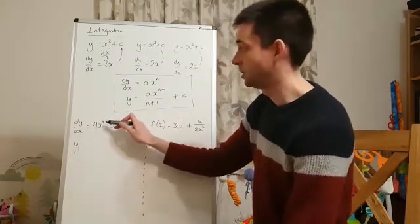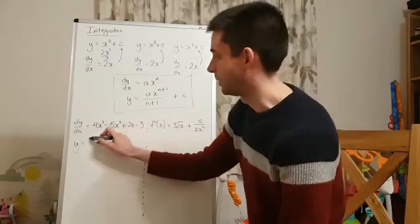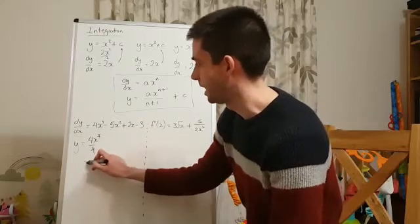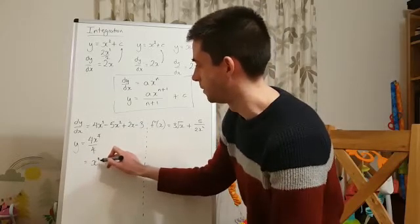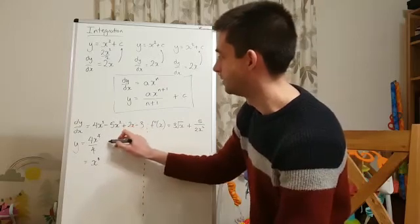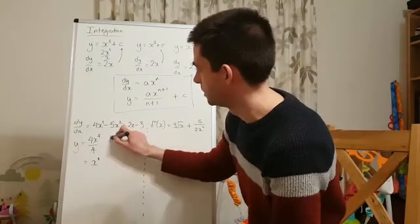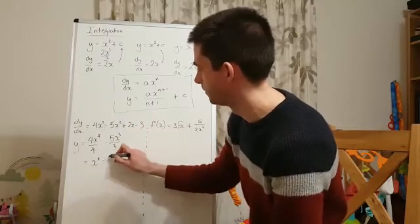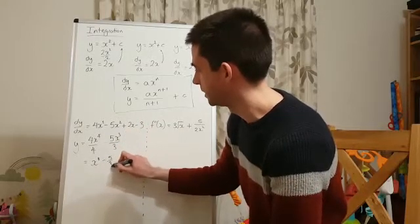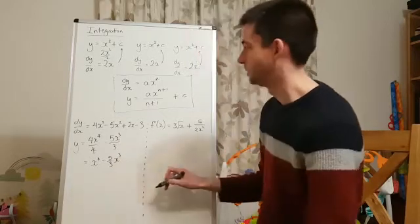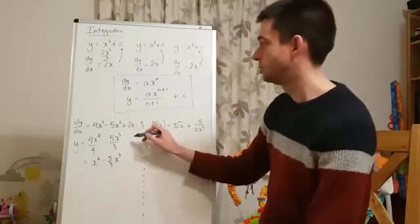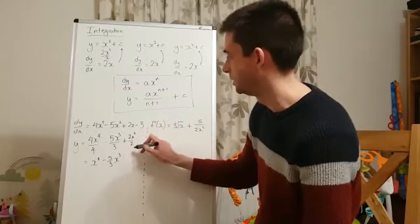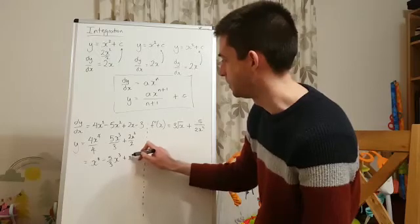So, if dy dx is 4x cubed, add 1 to the power, and divide by the new power, we're going to get x to the power of 4. Similarly here, minus 5x squared, we're going to add 1 to the power, and divide by the new power, and we're going to write that as negative 5 thirds x cubed. 2x, well, we've seen this one before, 2x squared, adding 1 to the power, divided by the new power, is going to be plus x squared.